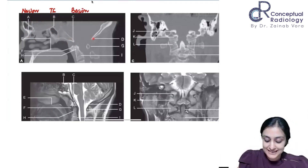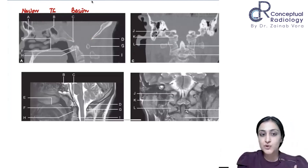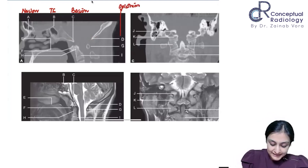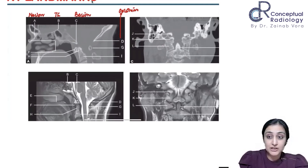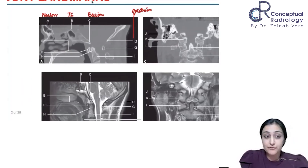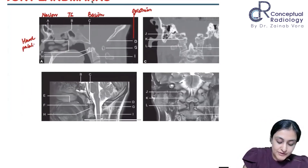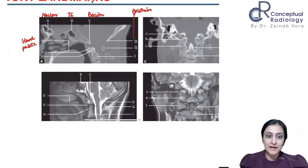What is point D here? That is the opisthion, right? You must have heard of the basion-opisthion line. So D is opisthion. Where is point E? E is the hard palate. All of these points are very important because all the lines that we are going to learn are going to run from these points.